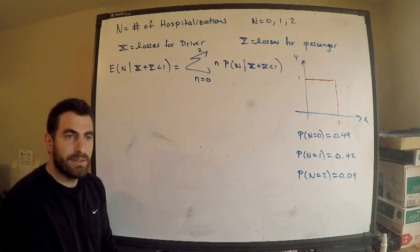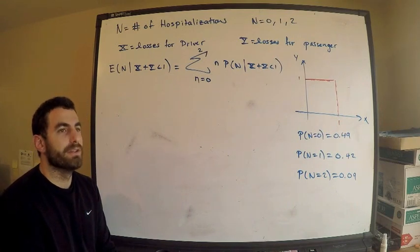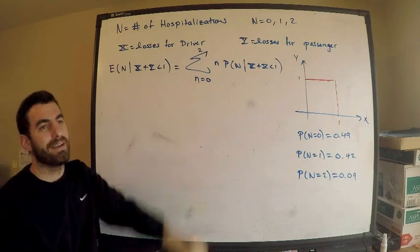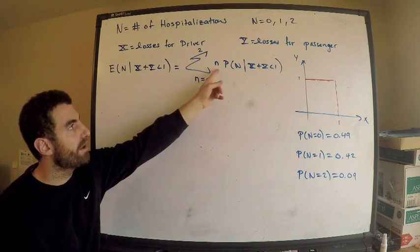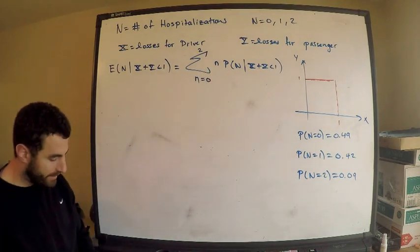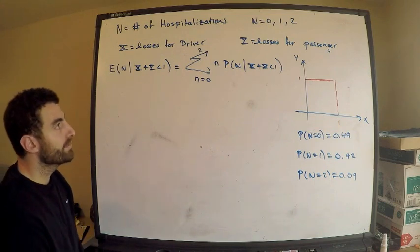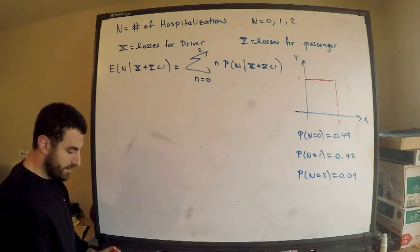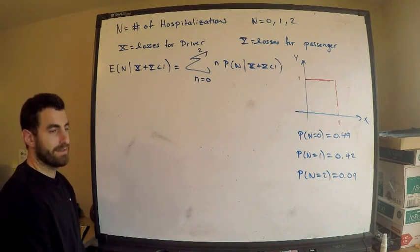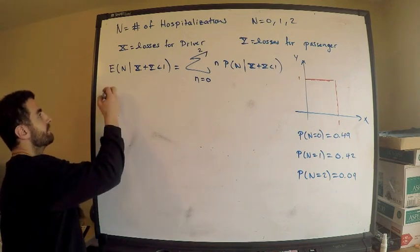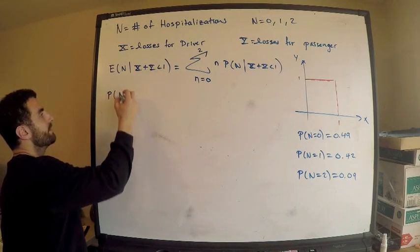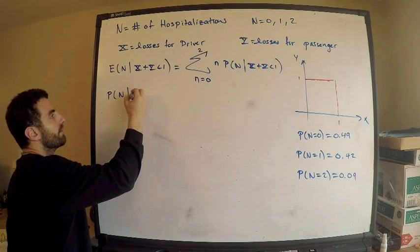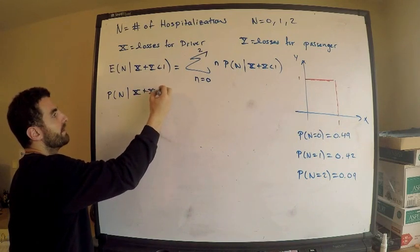Before you start blindly writing things down, always think about what you're going to do before you do it. We don't care about when N is 0 — because when I plug in N equals 0, this automatically zeros out. What we do care about is when N is 1 and when N is 2. So let me write down the main piece we need to compute: the conditional probability of N given the total loss is less than 1.